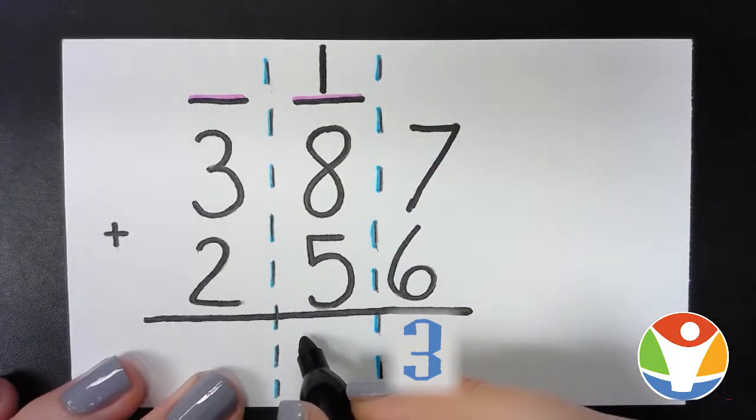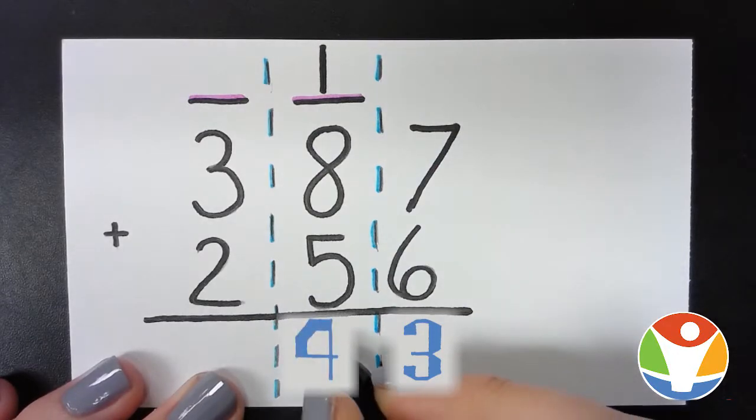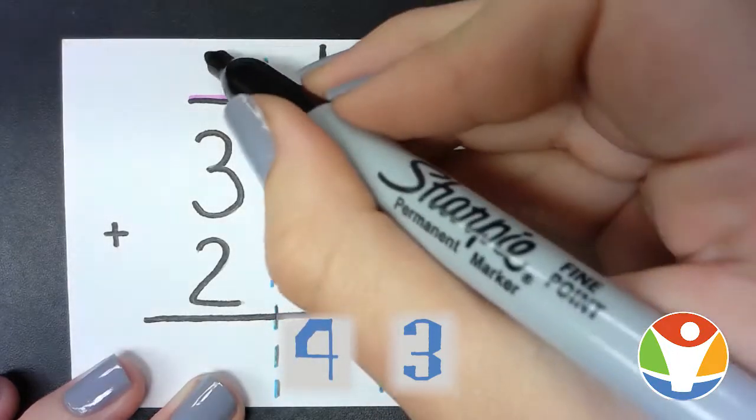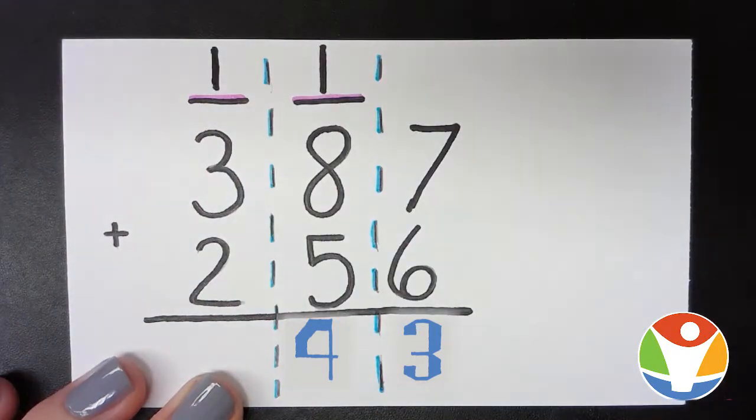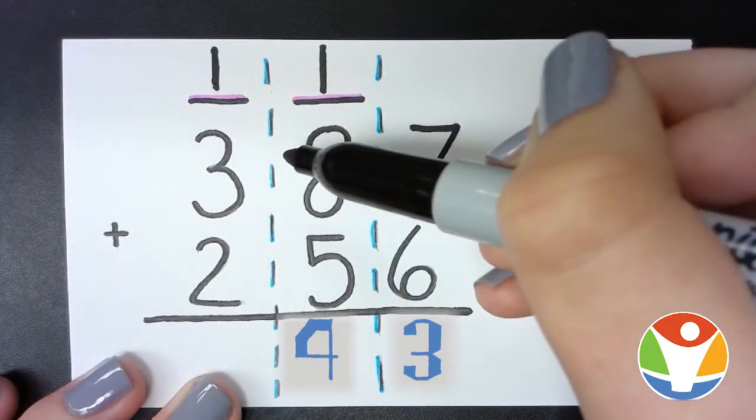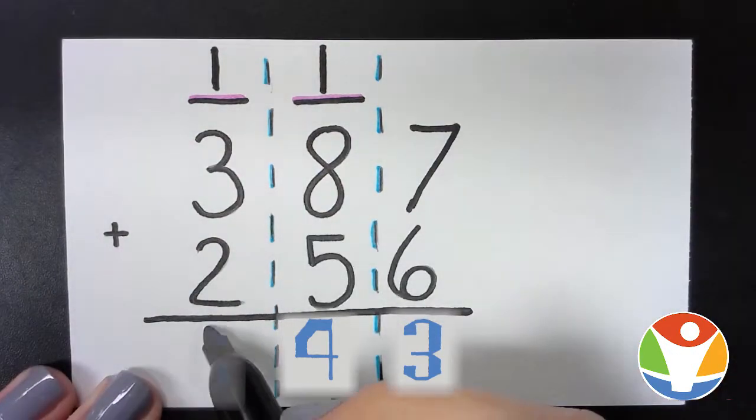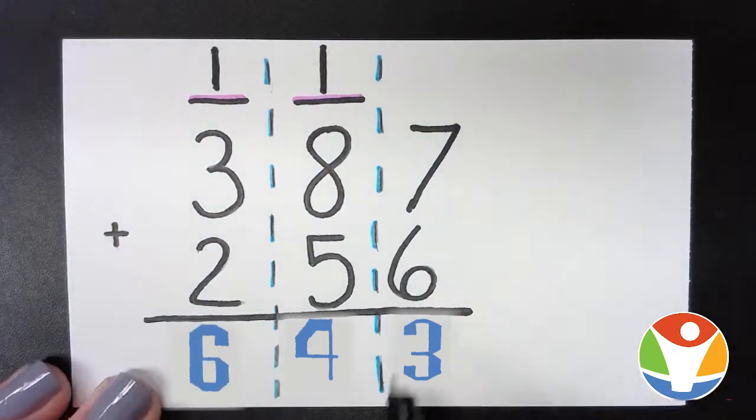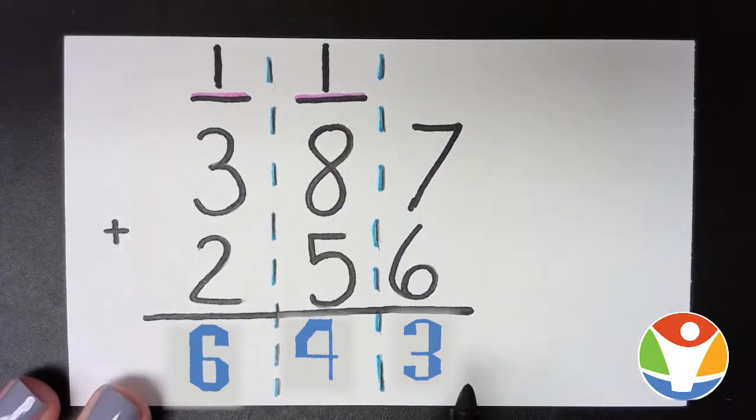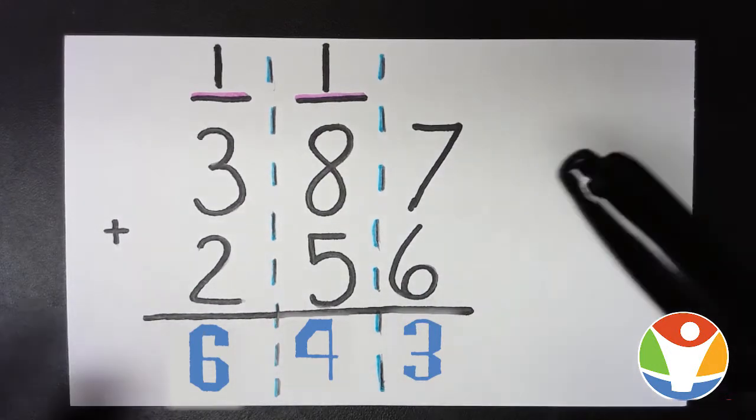So we draw our four and we carry our one next door. Now we have one plus three plus two, which will give us six, so your answer is 643. So if it's 10 or more, you go next door.